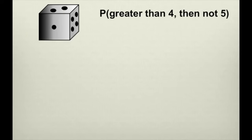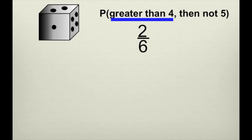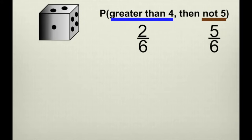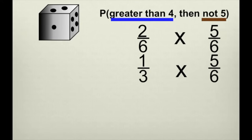Here we have two events. The first event is landing on a number greater than four — that's two out of six, because only five and six are greater than four. The second event is landing on a number that is not five — that's five out of six, since you can land on one, two, three, four, or six. We reduce two-sixths to one-third, then multiply one-third times five-sixths to get five-eighteenths.